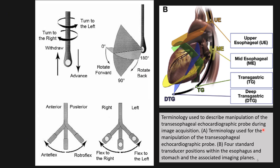Now let's find the answers. Transesophageal echo, or TEE, is performed at four levels: upper esophageal, which is usually for evaluation of the great arteries and veins; mid-esophageal, the most common window used for all valves and base of the heart evaluation; transgastric, which is especially good for aortic valve Doppler and gradient assessment; and finally, deep transgastric.